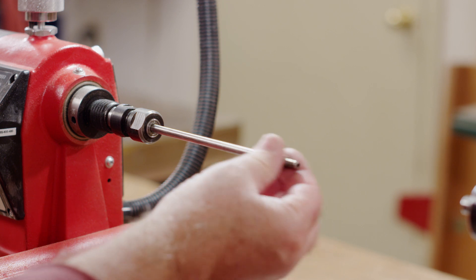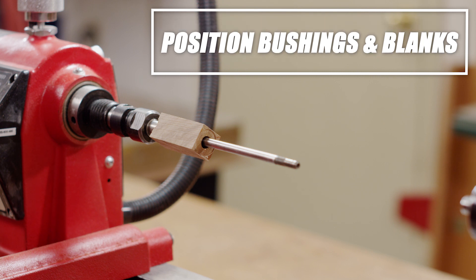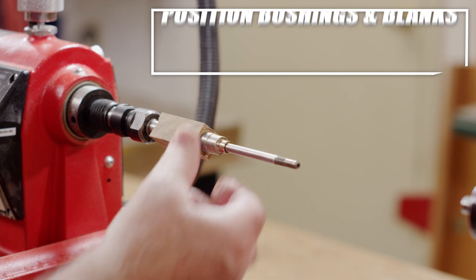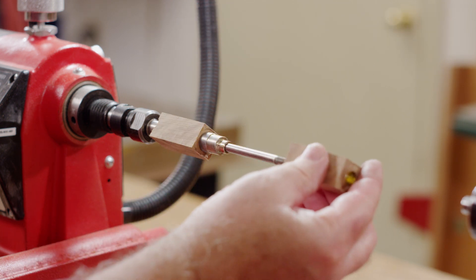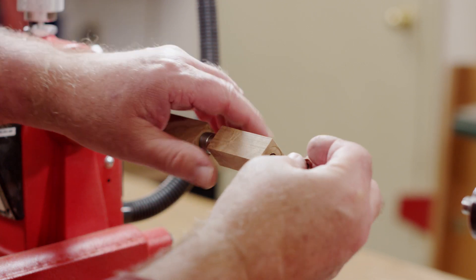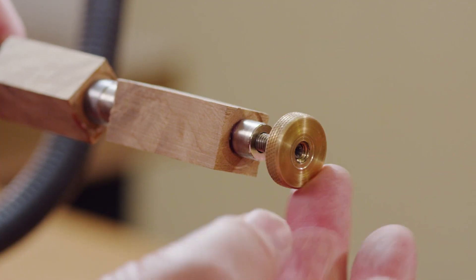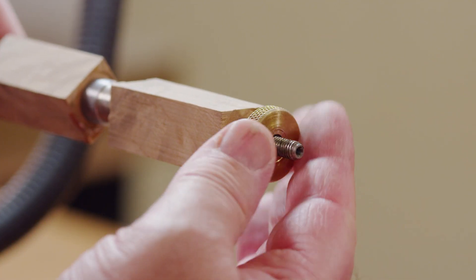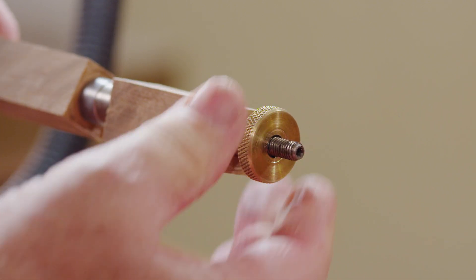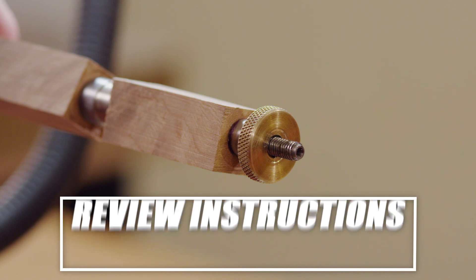Slide the taper headstock end of the mandrel into the lathe headstock, then position the bushings and blanks on the shaft. Support the larger diameter tube with the step on the bushing. Tighten the knurl nut to compress and secure the bushings and blanks to the shaft. Tighten the knurl nut just enough to keep the blanks from spinning on the mandrel while you turn. Different projects will use different bushing sizes, so consult your project instructions for the correct configuration.